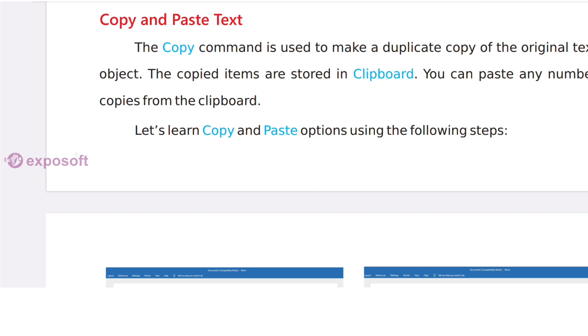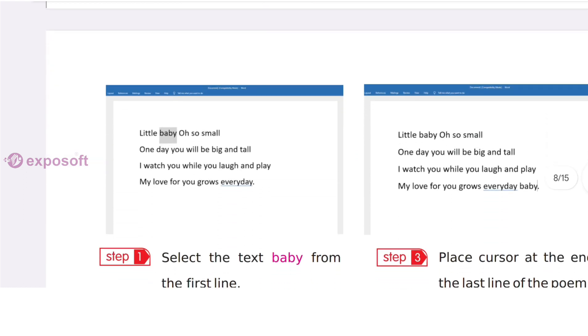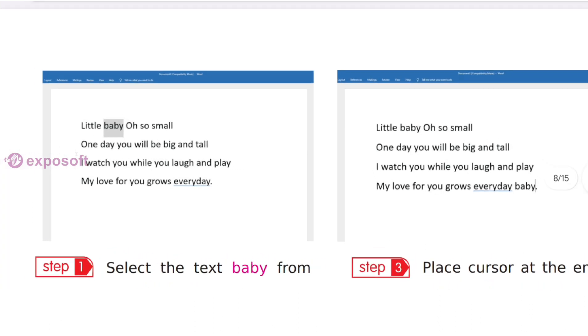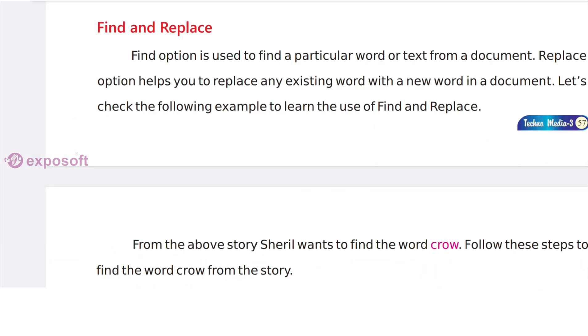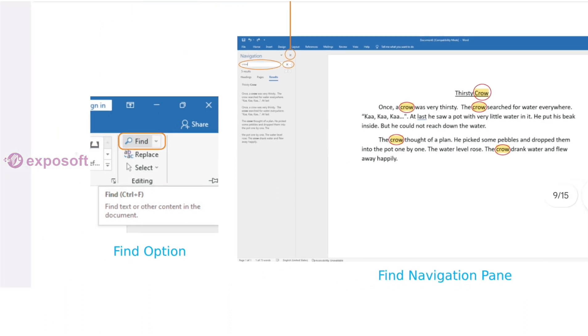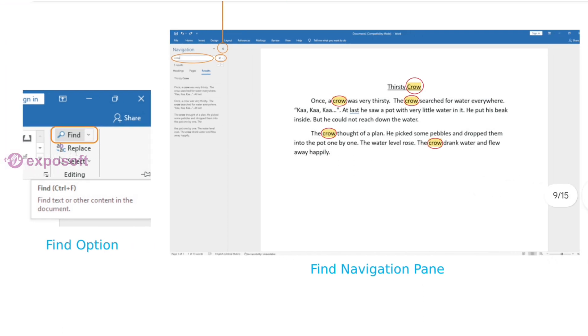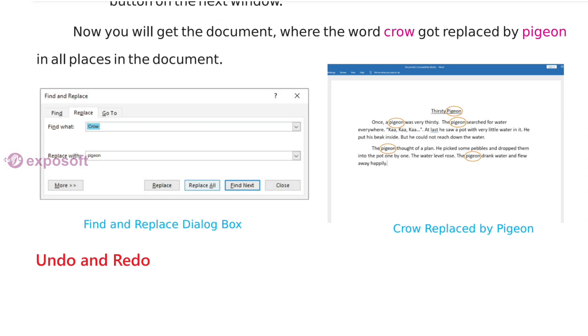Find and replace. Find option is used to find a particular word or text from a document. Replace option helps to replace any existing word with a new word in a document.